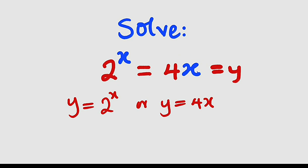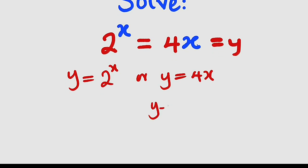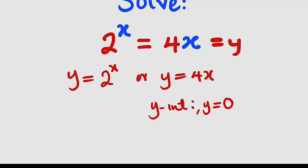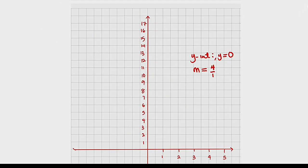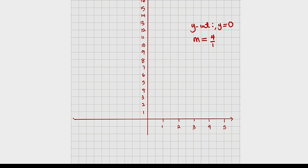I would like to start by graphing the linear function y=4x, which is a straight line graph. To construct any linear graph you need two important things: the y-intercept and the slope. The y-intercept is the value of y when x is equal to zero, so if you set x=0, you have y equal to zero as well — that's exactly where the line will cross the y-axis. The slope, denoted by m, is always the coefficient of x when the equation is in standard form, so we have four.